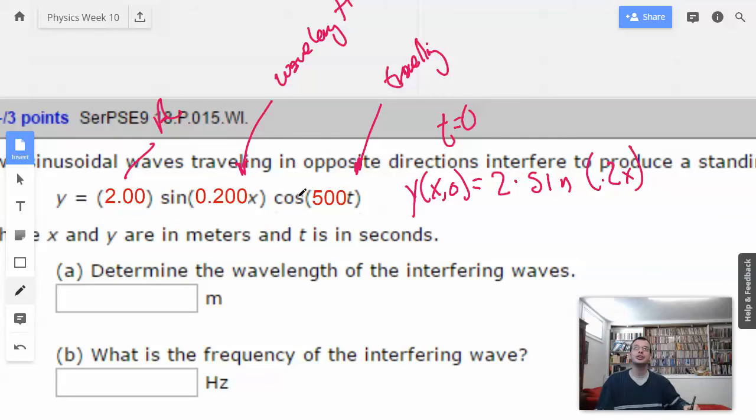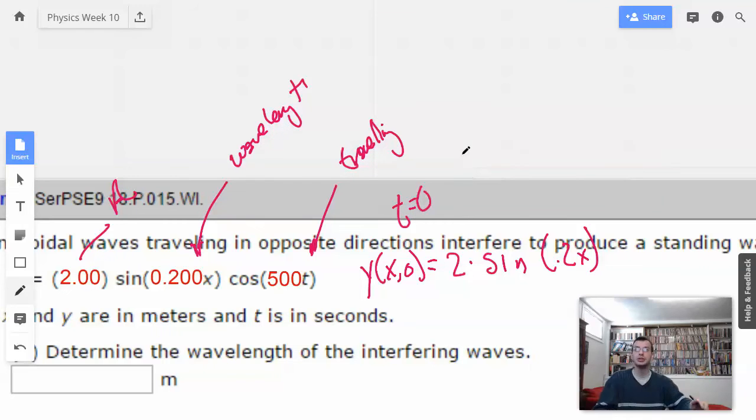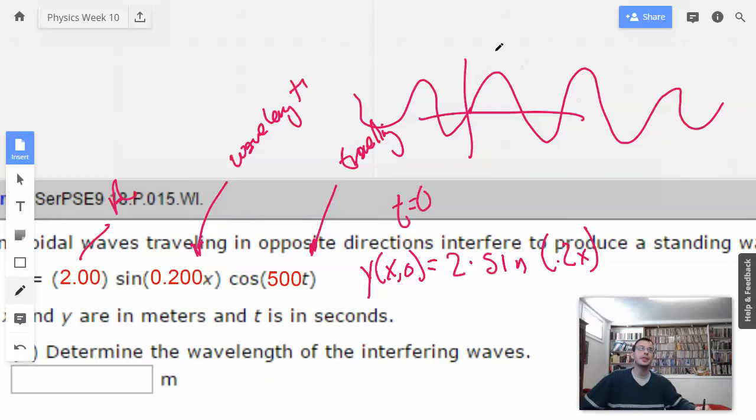We can say t equals whatever we want because t has nothing to do with wavelength. It has to do with time, frequency, period, maybe speed. When we say y of x equals 0, we're just going to get a sine function like this, and it's going to have waves going on forever. And we just want to find the distance between any two points.